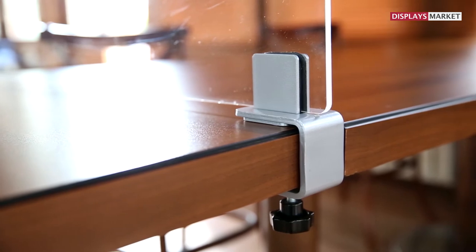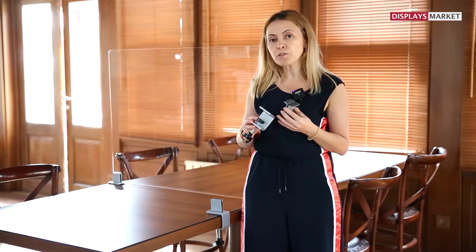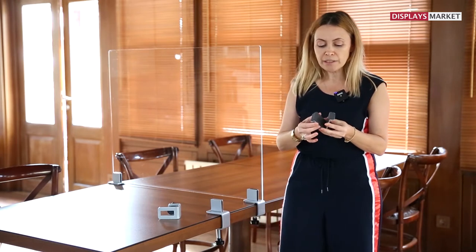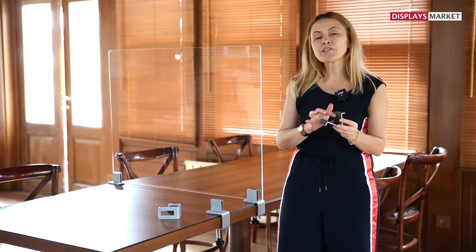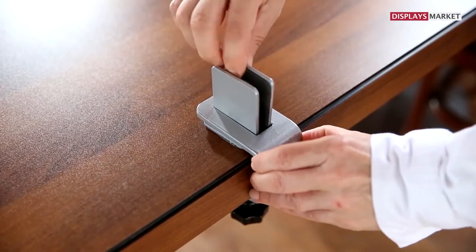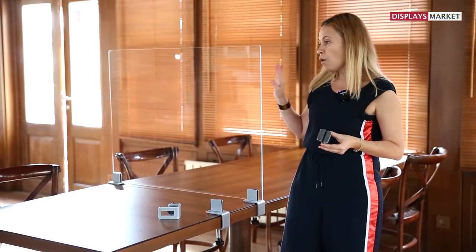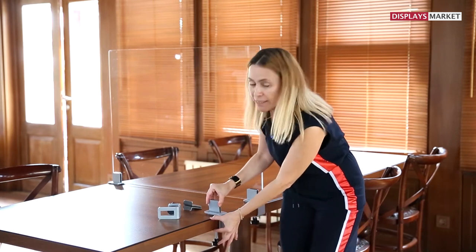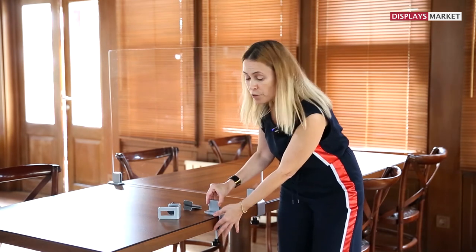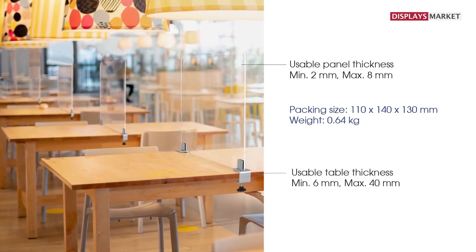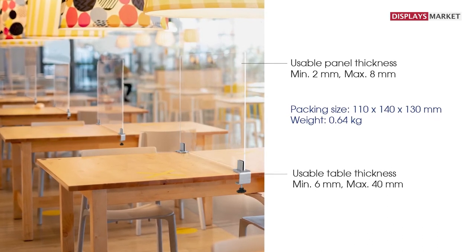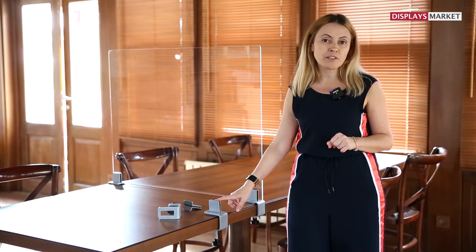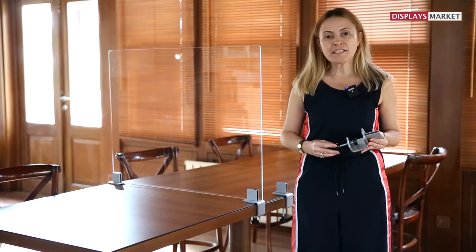It's made of strong, sturdy powder coated aluminum. Inside the clamps it is supported by EVA to avoid any scratches on the table or panel. It fits 6mm up to 40mm tables and holds panels minimum 2mm and maximum 8mm thick.